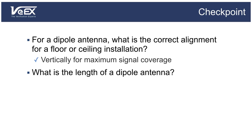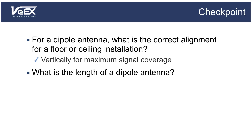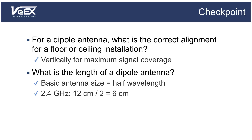What is the length of a dipole antenna? The length of a common dipole antenna is half the size of the wavelength that it transmits. So for Wi-Fi signals in the 2.4 GHz frequency band, the dipole has a length of 12 centimeters divided by 2, or 6 centimeters. For Wi-Fi signals in the 5 GHz frequency band, the dipole has a length of 5.5 centimeters divided by 2, or 2.75 centimeters. Note that antenna designs vary, but they're always either a fraction or a multiple of the wavelength of their operating frequency.